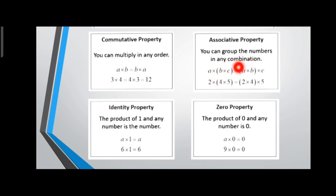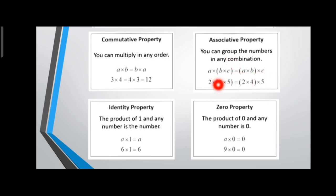The next property is the associative property. You can group the numbers in any combination and the result will be the same. That is, (a × b) × c = a × (b × c). When you group numbers in any combination, the result remains the same — this is the associative property.